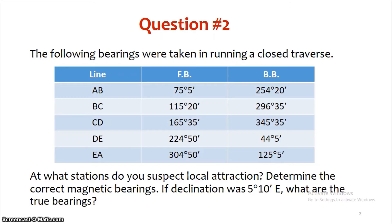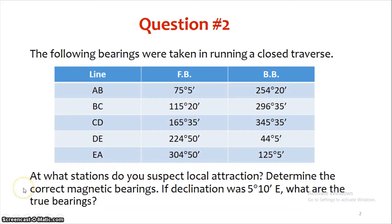This is the problem. The following bearings were taken in running a closed traverse. At what stations do you suspect local attraction?